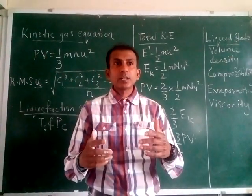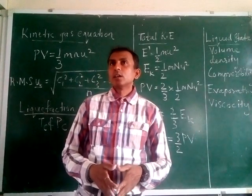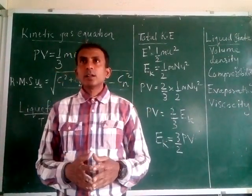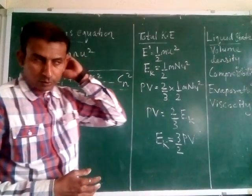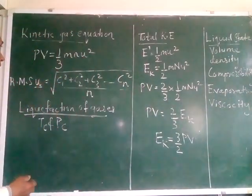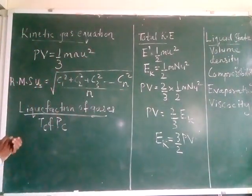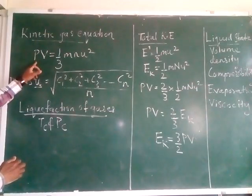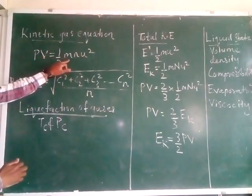Kinetic means related to motion, and gaseous molecules are continuously in random motion. We have to study this particular equation, and the kinetic gas equation is given by PV equals 1 by 3 m n u square.